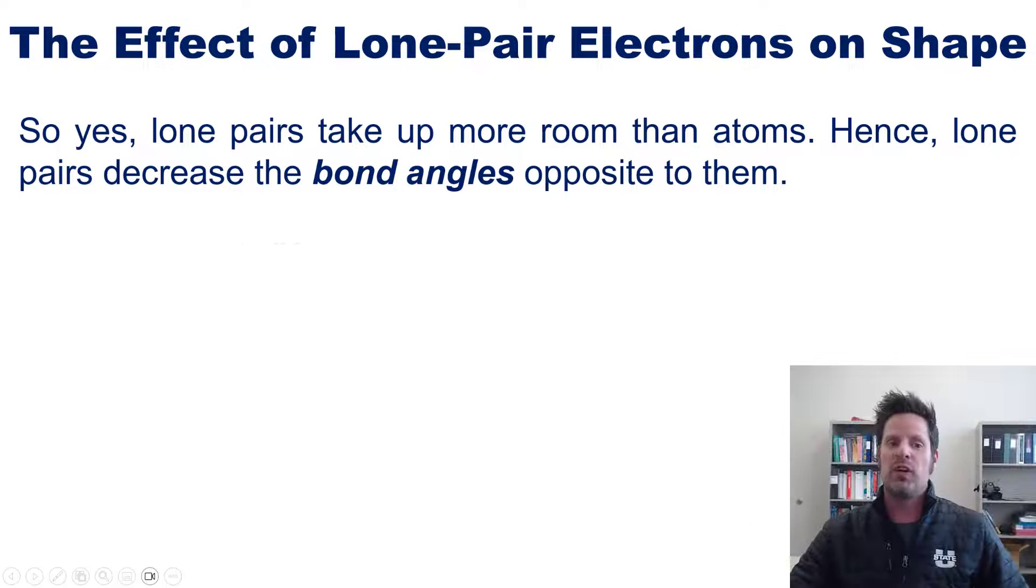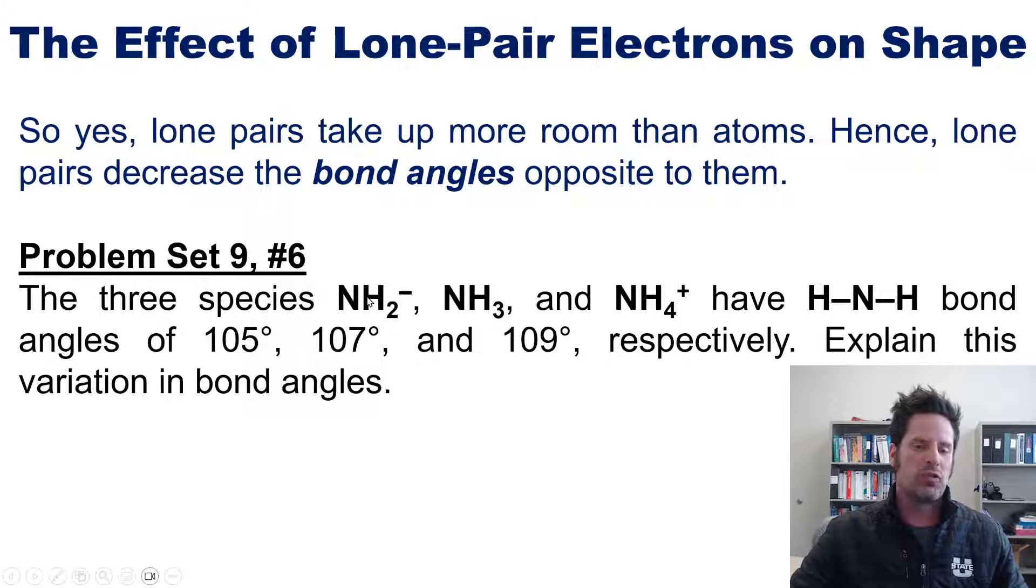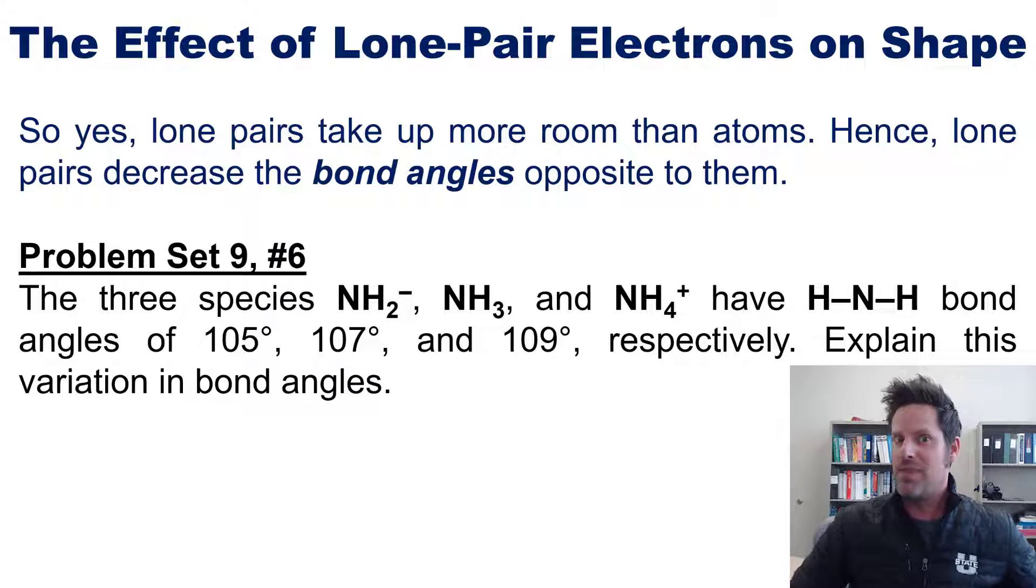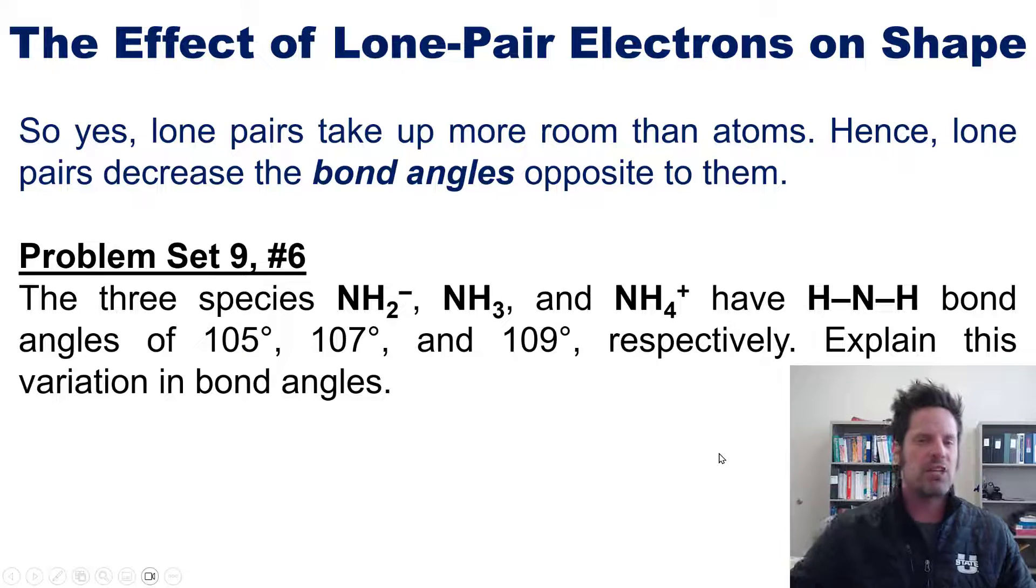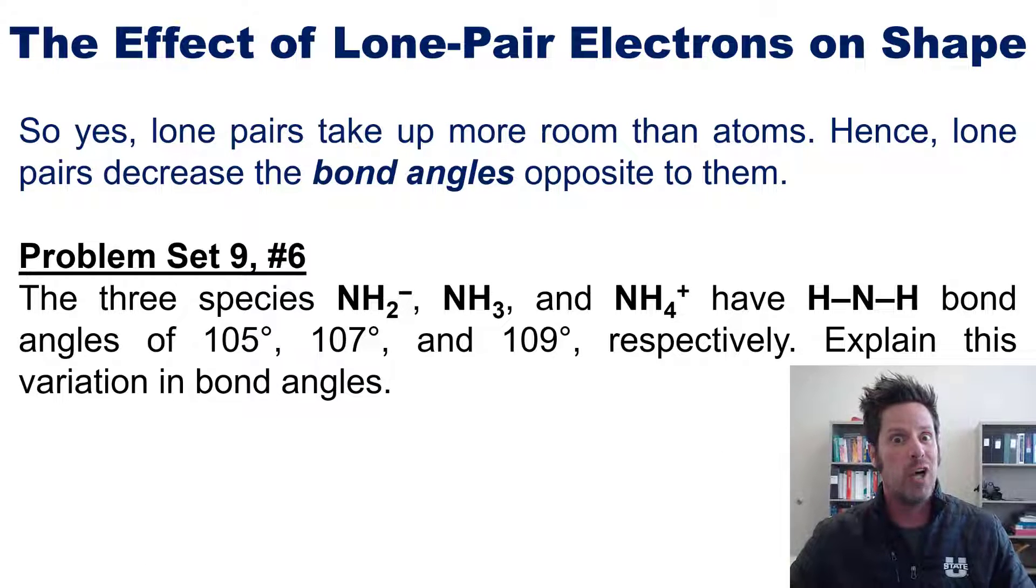That takes us then to this beautiful lecture problem. The three species whose formulas are shown right here have hydrogen-nitrogen-hydrogen bond angles of 105, 107, and 109, respectively. I want you to explain this variation in their bond angles. I'm not going to answer that question for you, but I suspect, given the information I just provided, you can probably do it on your own.